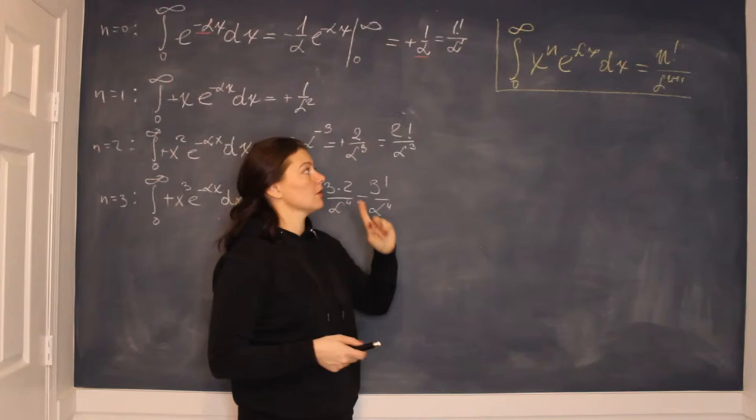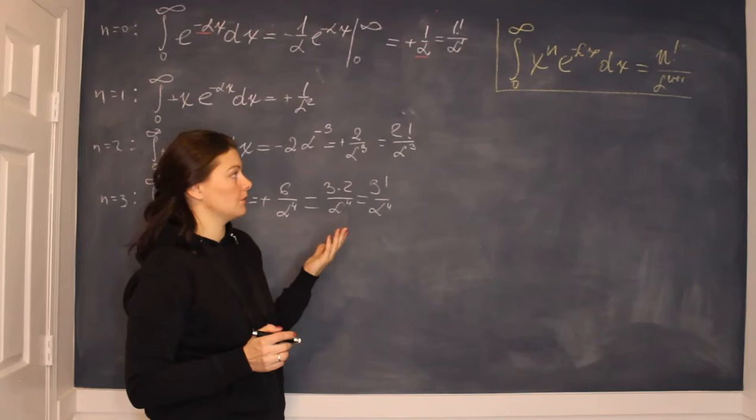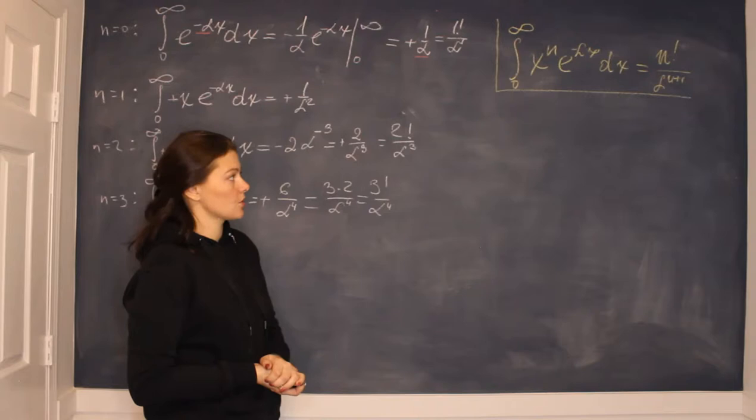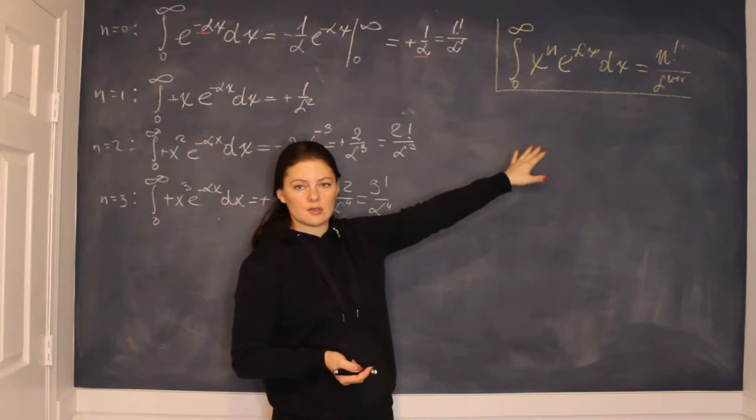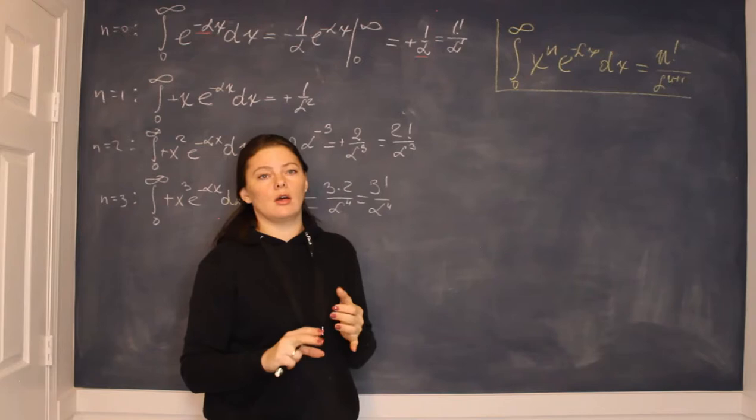This integral defines a factorial function, but it's only valid for non-negative integer values of n. The question is: what if we have a negative integer, or if n is a non-integer — some fraction or decimal? For those cases the same function has been defined a little differently, and it's called the gamma function. Essentially, the gamma function is a factorial function for non-integer and negative integer values of n.